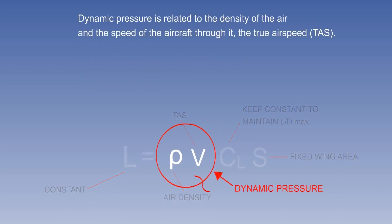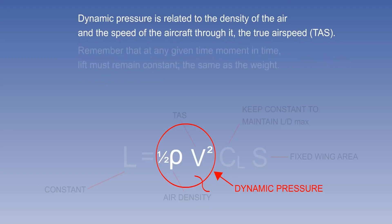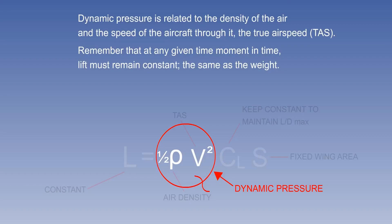Dynamic pressure depends on air density and TAS and is related to the kinetic energy of the airflow. So the formula is based on half the density and the square of the TAS. Remember that for straight and level flight, lift must remain constant. It is important to remember this formula: L = ½ρV² × CL × S.